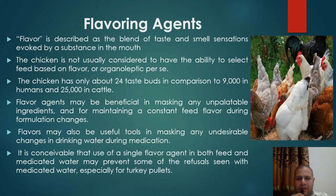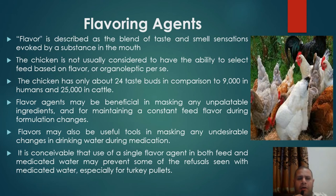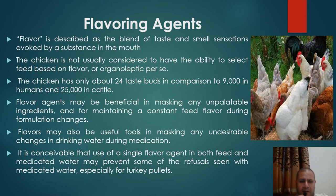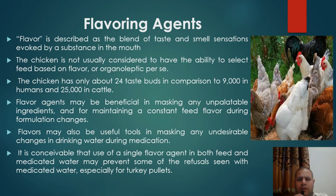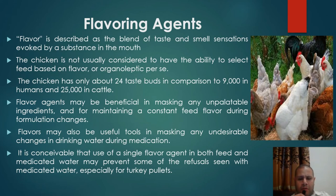Flavor is described as the blend of taste and smell sensations evoked by a substance in the mouth. Chickens are not usually considered to have the ability to select feed based on flavor or organoleptic properties — the chicken has only about 24 to 300 taste buds compared to 9,000 in humans and 25,000 in cattle. Flavor agents may be beneficial in masking unpalatable ingredients and maintaining constant feed flavor during formulation changes. Flavor may also be a useful tool in masking undesirable changes in drinking water during medication, particularly to prevent refusal seen with medicated water in turkey pullets.